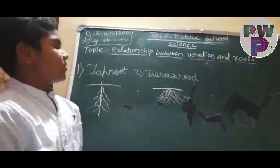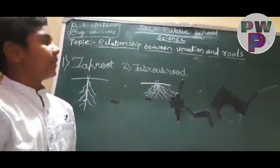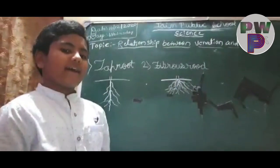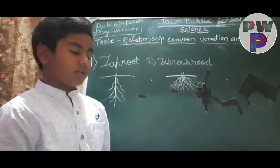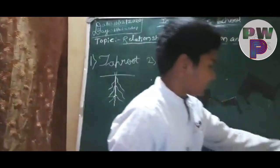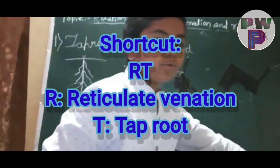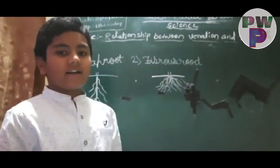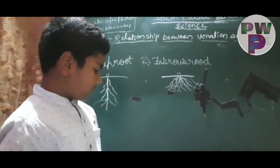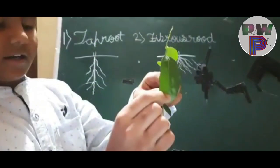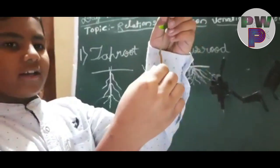Next, the relationship between venation and roots. If the plant has parallel venation, it has fibrous roots. For example, we will see in this — here the leaf has parallel venation and the root is fibrous root. If the plant has reticulate venation, the root has tap root. Here the leaf has reticulate venation and the root is tap root.